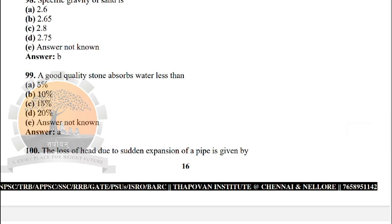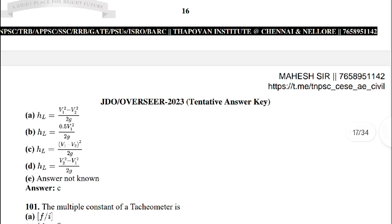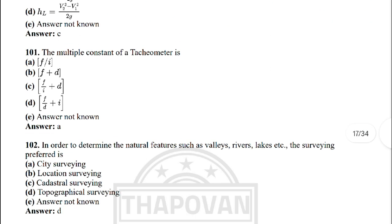Next: the quality of stone absorbs water less than — the correct answer: 5 percentage. Next: the loss of head due to sudden expansion of the pipe is given by — the correct answer is option C: hL = (V1 − V2)² / 2g.